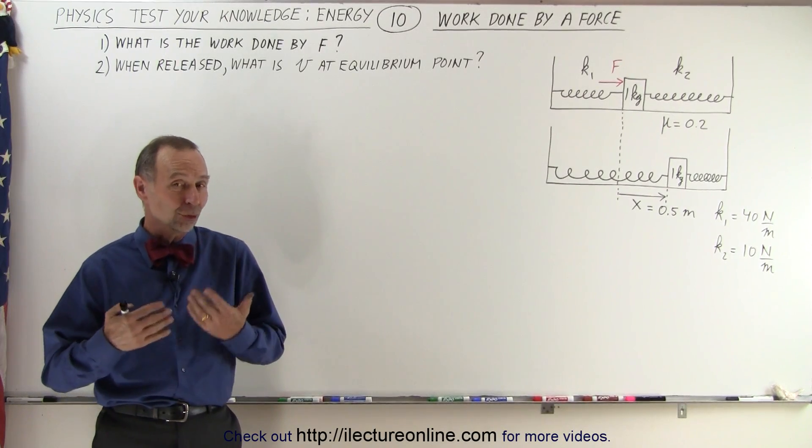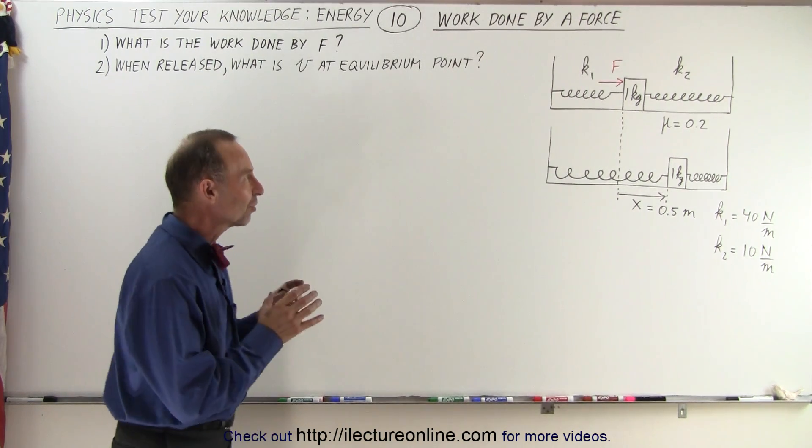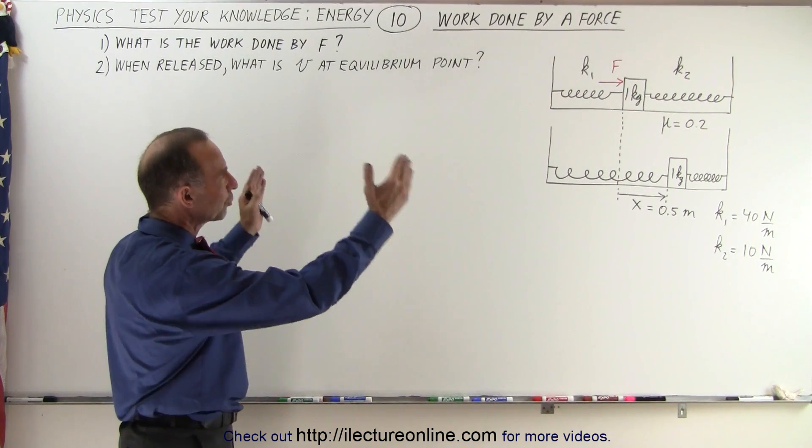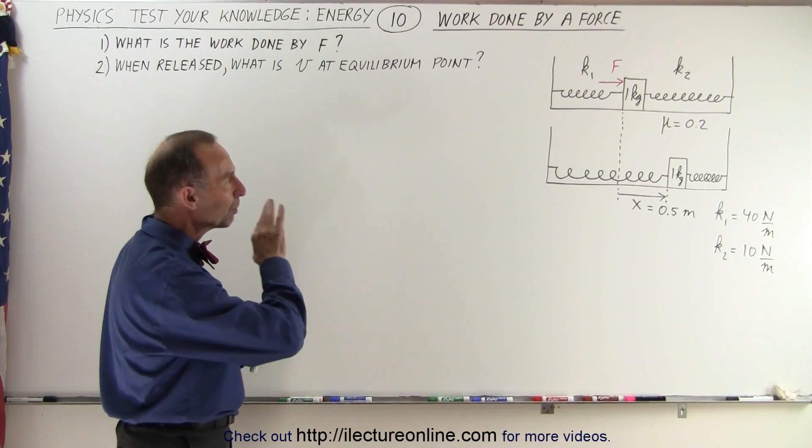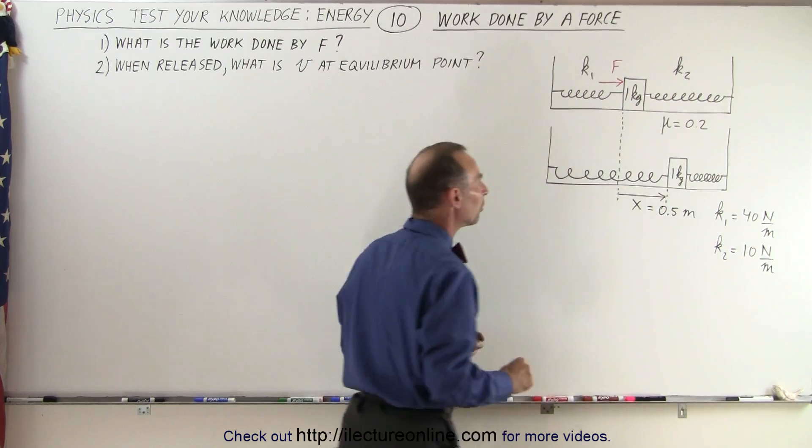Our next problem deals with two springs and a mass of one kilogram, but in this case the mass is positioned between the two springs which are fastened on two anchors on either side. We're applying a force to the mass and pushing it 0.5 meters away from the equilibrium point.